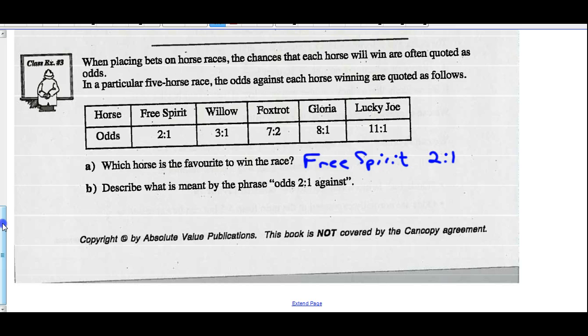Describe what is meant by the odds 2 to 1 against. Well, a free spirit will not win two times for every time that he does win once. So odds against, like it says here. If we look at the idea of free spirit, let's look at his probability. Odds against him winning are two. So one favorable out of three total. So that's free spirit's probability of winning. That's the highest probability on there.